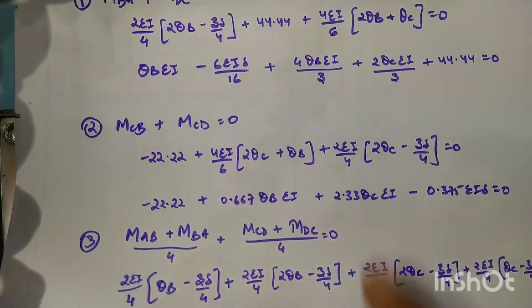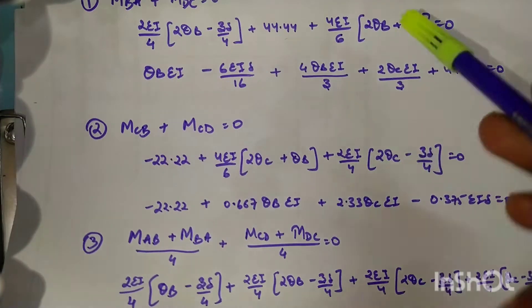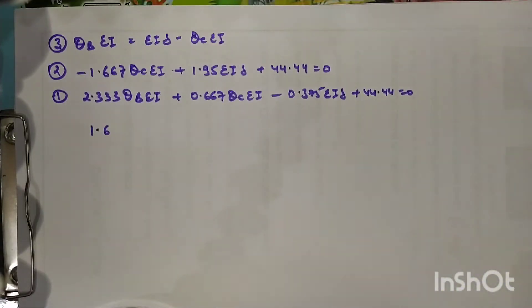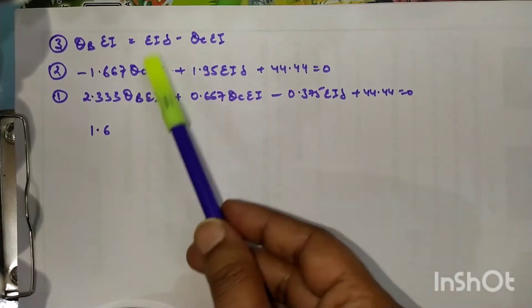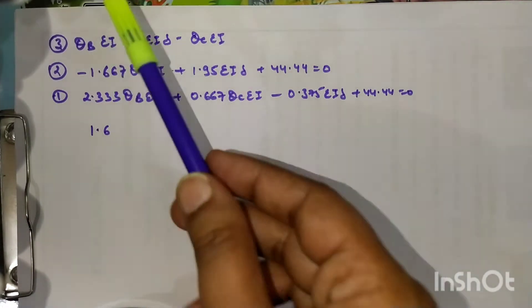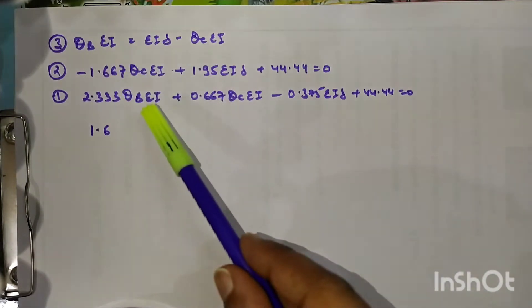We will be simply multiplying the values and opening all the brackets for calculating the value of theta B, theta C, and delta. We will be substituting all the values in the main equation so that we can identify the value of theta B, theta C, and delta.